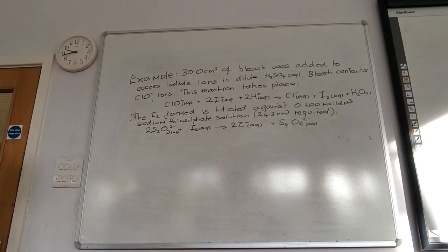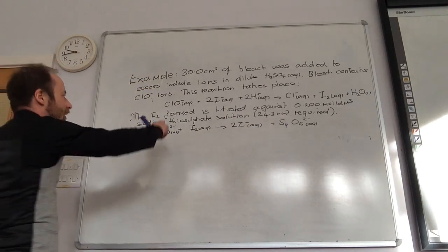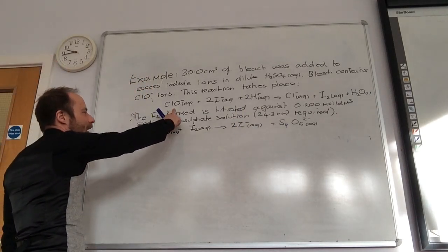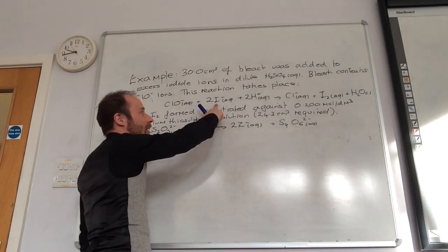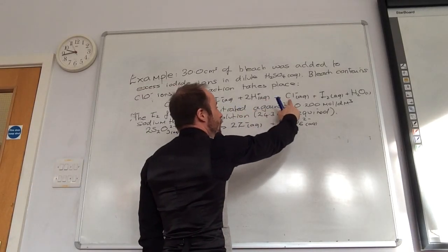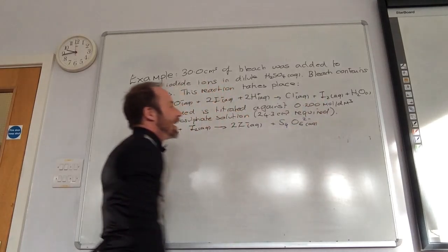Why do I need dilute sulfuric acid? Well, to get this equation to work. So that's my CLO minus, that's come from the bleach. I've added excess iodine ions. In acid, I've produced chloride ions, iodine, which is a key thing, and water.